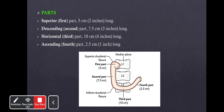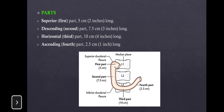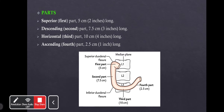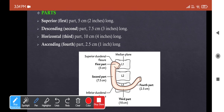Going for the parts of the duodenum: this is a 10-inch-long structure, further divided into four parts. First is the superior or first part, second is the descending or second part, third is the horizontal or third part, and fourth is the ascending or fourth part.